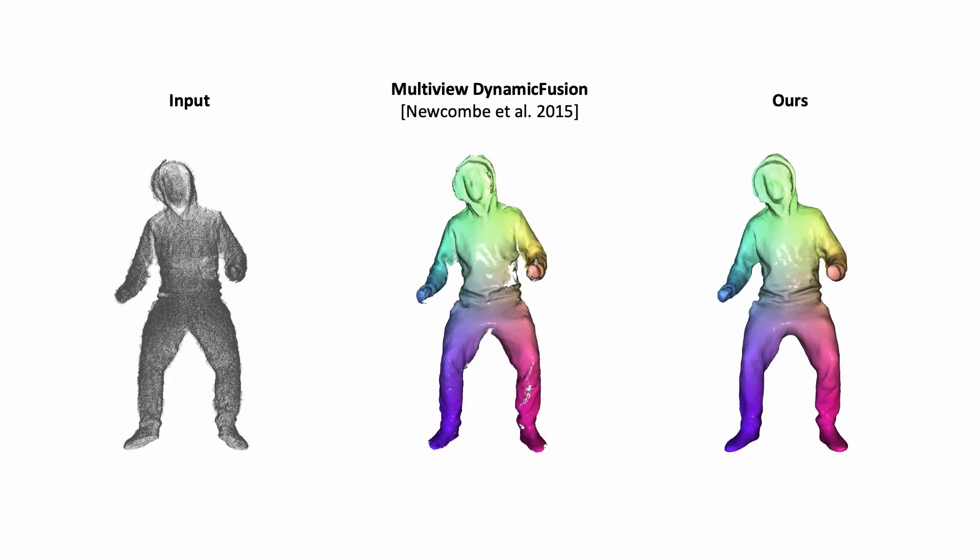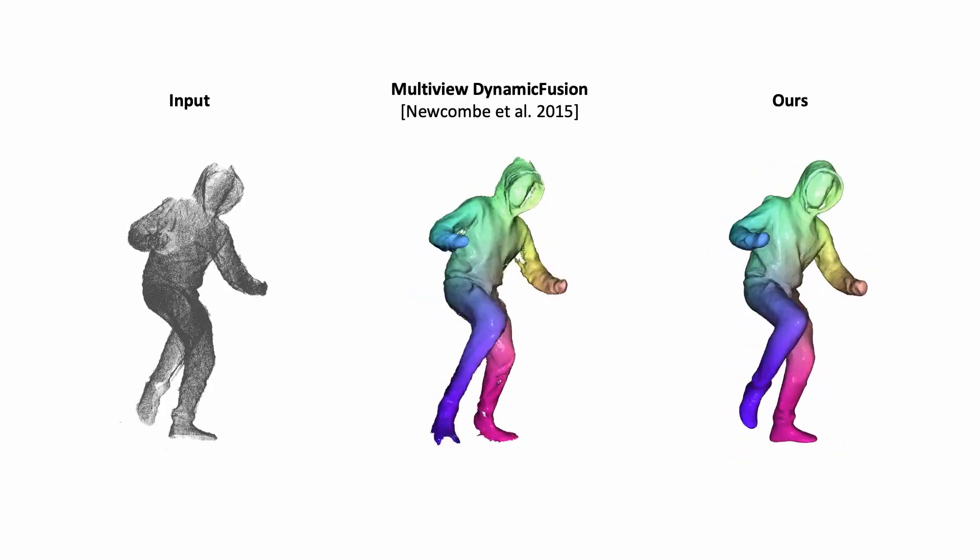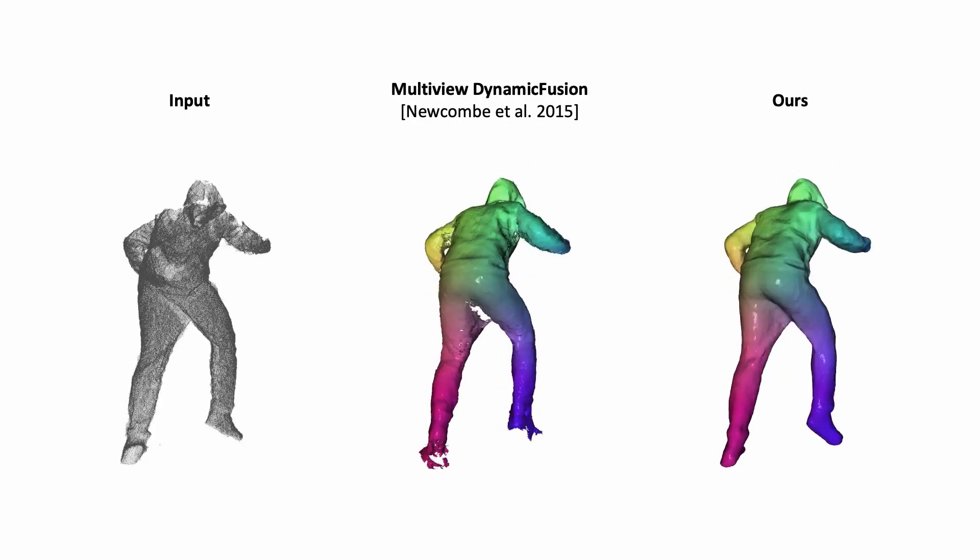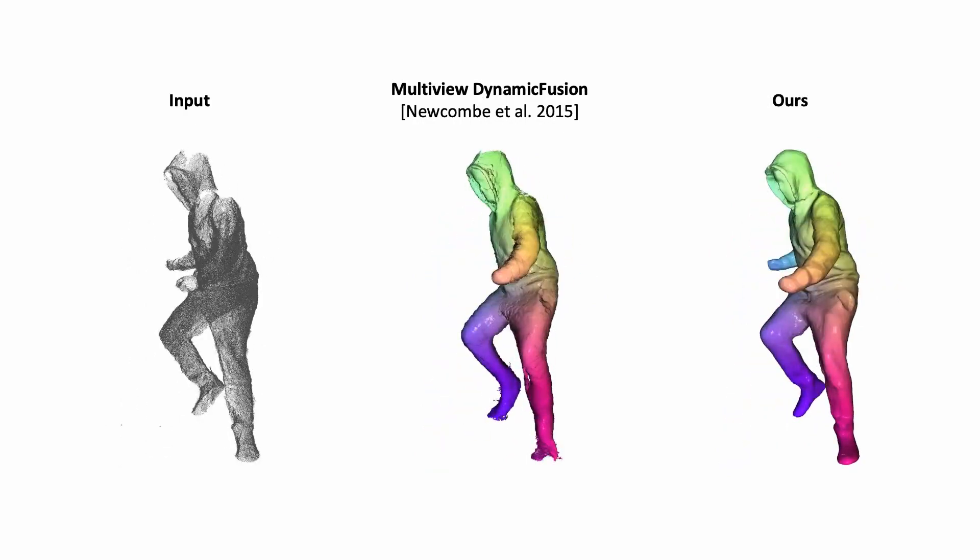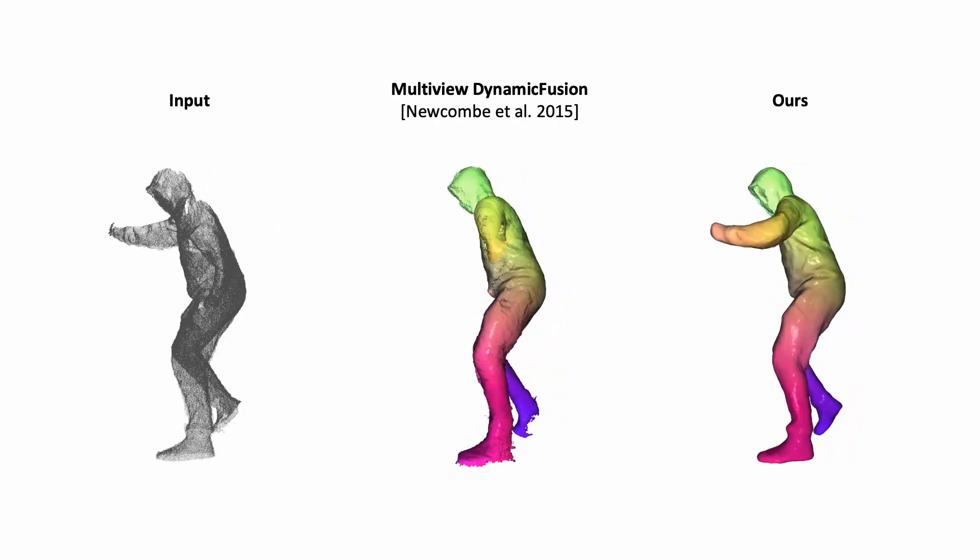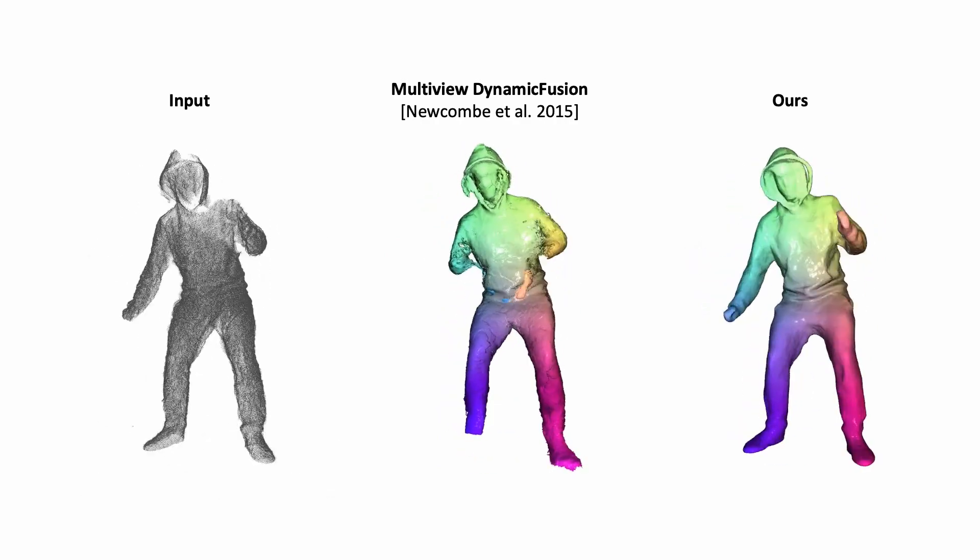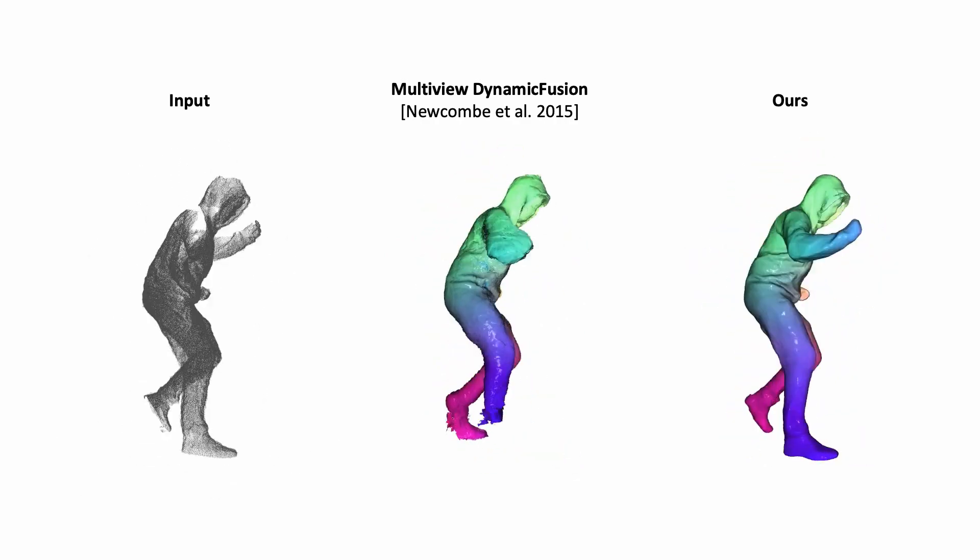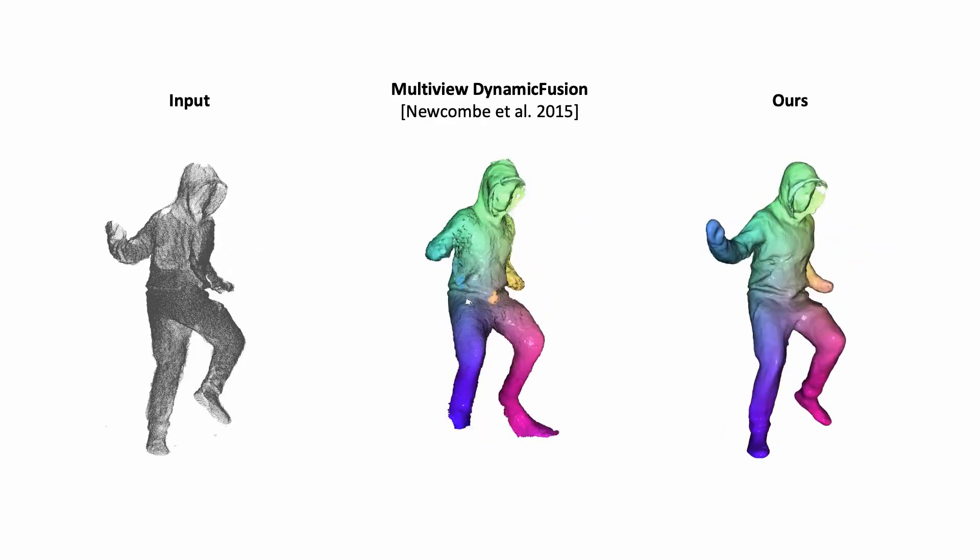In comparison to dynamic fusion, our method does not suffer from frame-to-frame error accumulation and reconstructs a complete and consistent surface. Such frame-to-frame tracking, especially on sequences with fast motion, leads to a loss of tracking with disintegration of the signed distance function values of the reconstructed surface.